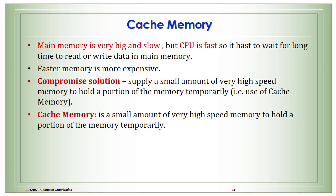Cache memory is used because of a speed mismatch problem: the CPU is fast while the main memory is very large and slow, so the CPU has to wait a long time to read or write data. The solution is to place cache memory between the main memory and the CPU. Cache memory is a small amount of very high-speed memory used to temporarily hold a portion of main memory content.